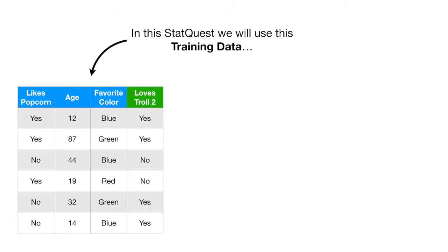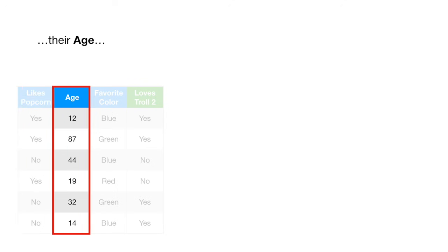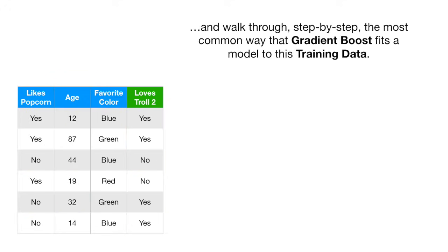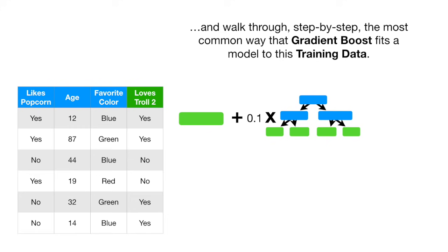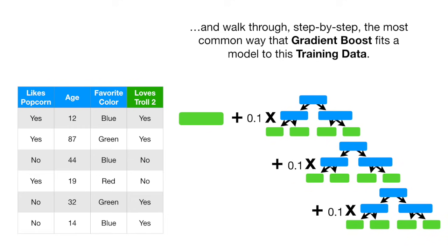In this StatQuest, we will use this training data, where we have collected popcorn preference from six people, their age, their favorite color, and whether or not they love the movie Troll 2, and walk through, step by step, the most common way that gradient boost fits a model to this training data.